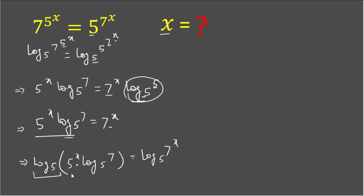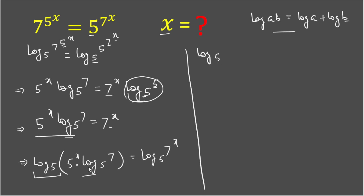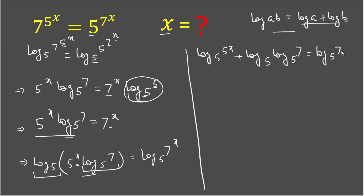The multiplication inside the log means it is in the form log(a · b), which we can write as log a + log b. Applying this, the left-hand side becomes log base 5 of 5^x plus log base 5 of 7, and the right-hand side is log base 5 of 7^x.